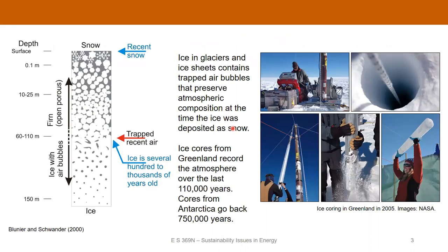I want to start by talking about ice coring and how we understand what the composition of the atmosphere has been in the geologic past. When you look at places like Greenland or Antarctica, which are covered all the time with ice, snow is deposited at the surface and over time, as it gets buried by more and more snow, those snow crystals anneal and turn into blockier ice crystals. Eventually they fuse together and the air present in the interstitial space between those crystals gets trapped — down at a depth of somewhere between 60 and 100 meters below the surface. So what we can do is drill down and collect core samples of that ice.